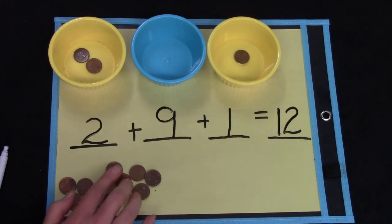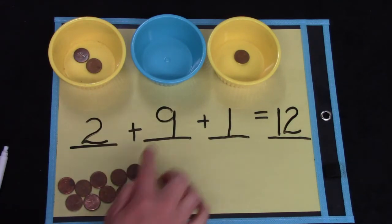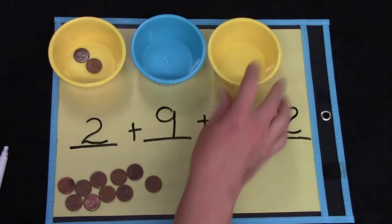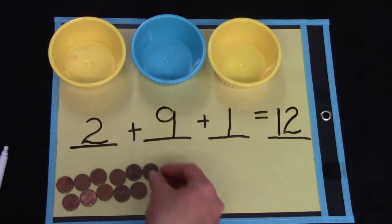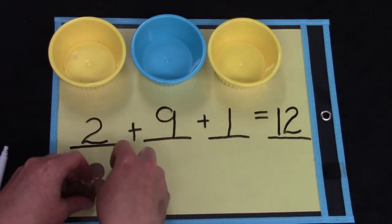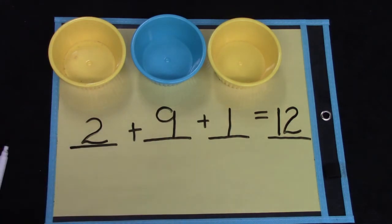Let's try this. Two, four, six, eight, nine, ten, eleven, twelve. Today we're going to look at different strategies for adding three or more numbers together.